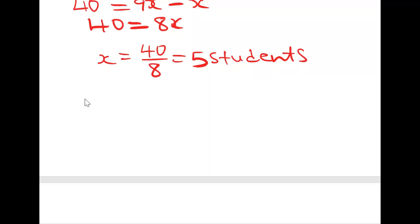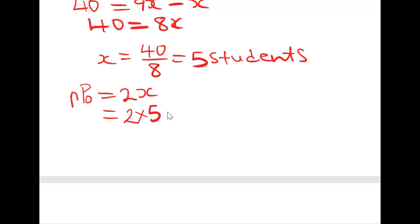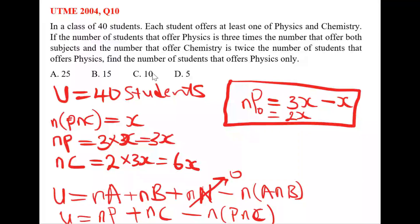Remember that the number of students that offer physics only is equal to 2x. Substituting x equals 5, we get 2 times 5, which equals 10 students. Coming back to our question, option C is the right answer. You can also try solving this with a Venn diagram and compare it with our solution to see if you get the same answer.